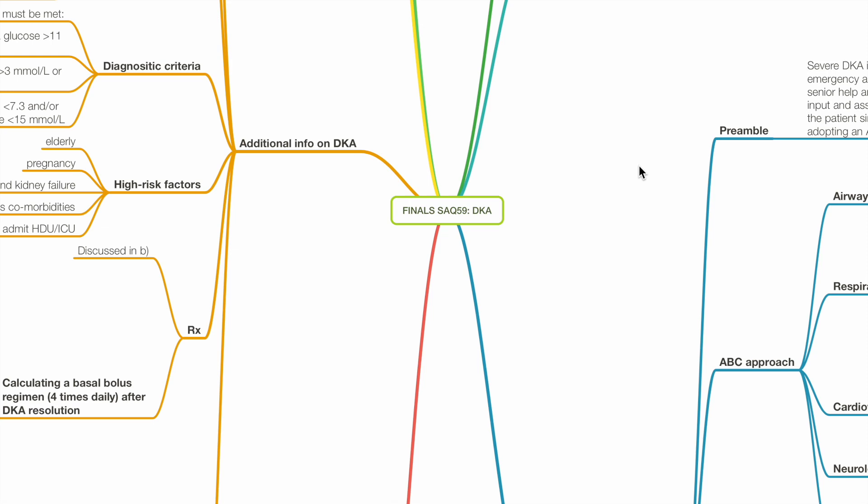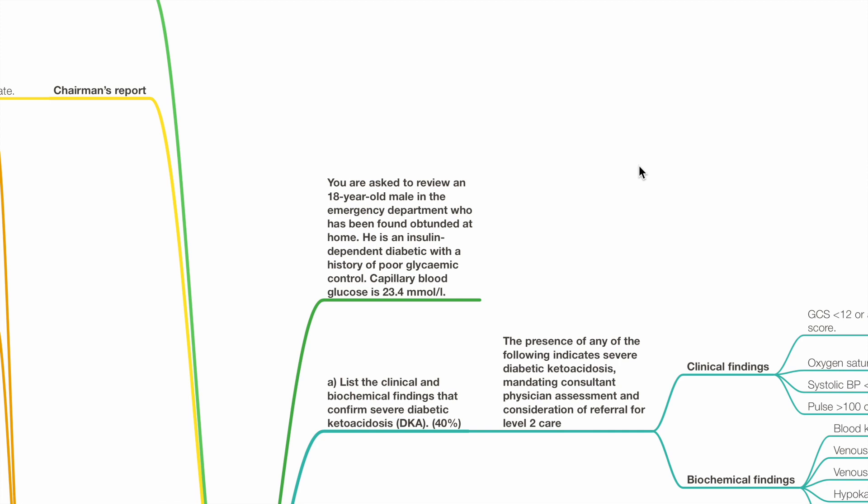Finals SAQ 59, DKA and other diabetic emergencies. You are asked to review an 18-year-old male in the emergency department who has been found unconscious at home. He is an insulin-dependent diabetic with a history of poor glycemic control. Capillary blood glucose is 23.4 mmol per liter.